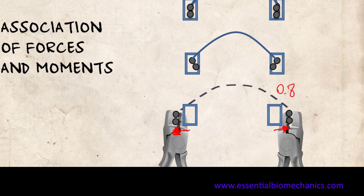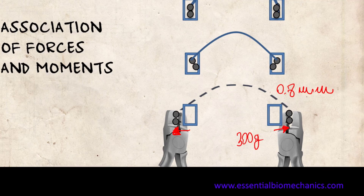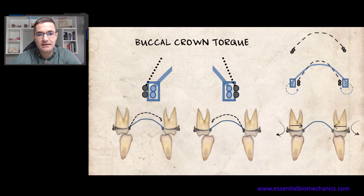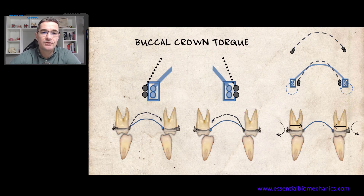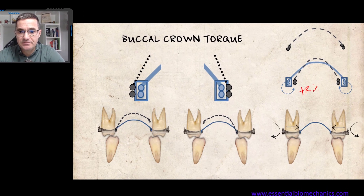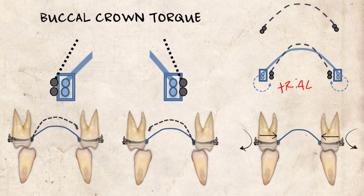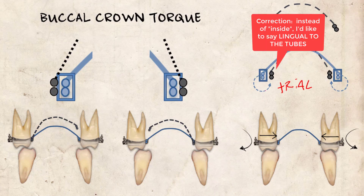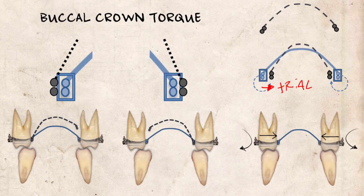If I'm talking about a 0.8 mm bar, the expansive forces here are around 300 grams on each side — a very important expansive force. The contrary is also true: if I apply a buccal crown torque and make a trial activation, you will see that parallelism will occur when the terminal ends are inside the tubes. It means that whenever I apply buccal crown torques, I will generate constrictive force, as in our example.